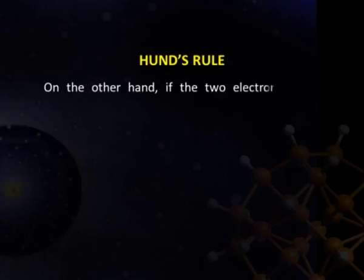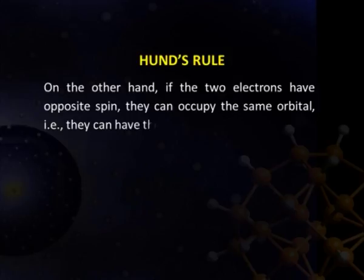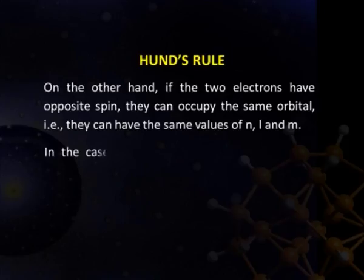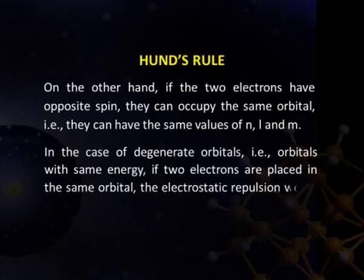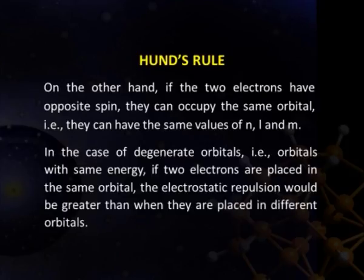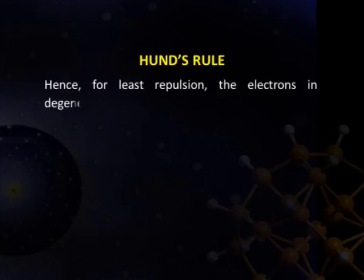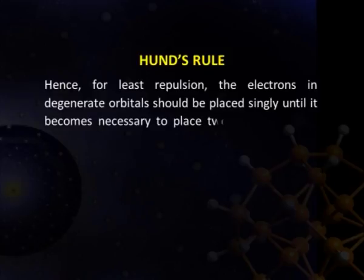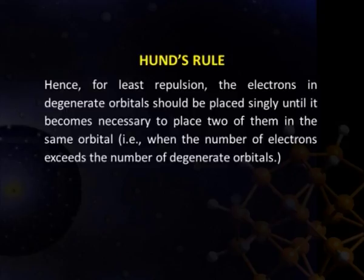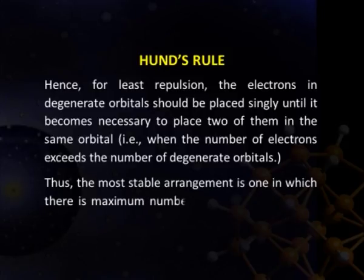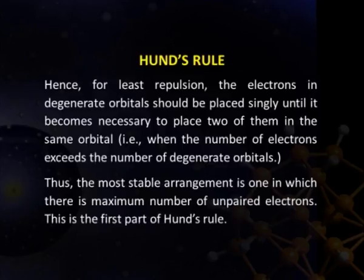On the other hand, if two electrons have opposite spin, they can occupy the same orbital. In the case of degenerate orbitals, if two electrons are placed in the same orbital, electrostatic repulsion would be greater than when they are placed in different orbitals. Hence, for least repulsion, electrons in degenerate orbitals should be placed singly until it becomes necessary to pair them. Thus, the most stable arrangement is one with the maximum number of unpaired electrons. This is the first part of Hund's rule.